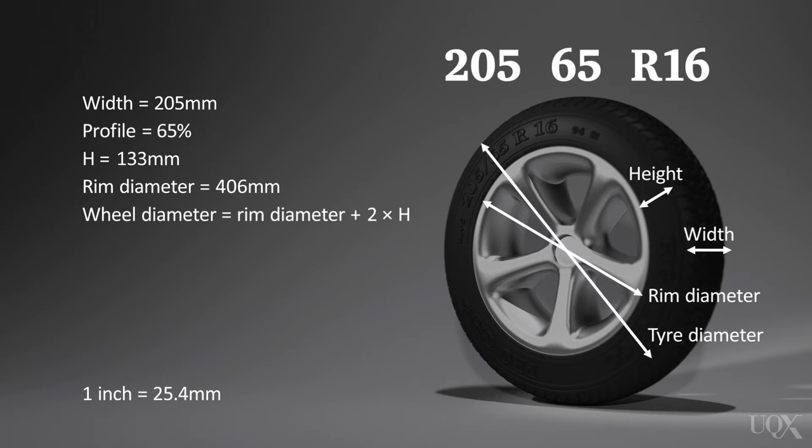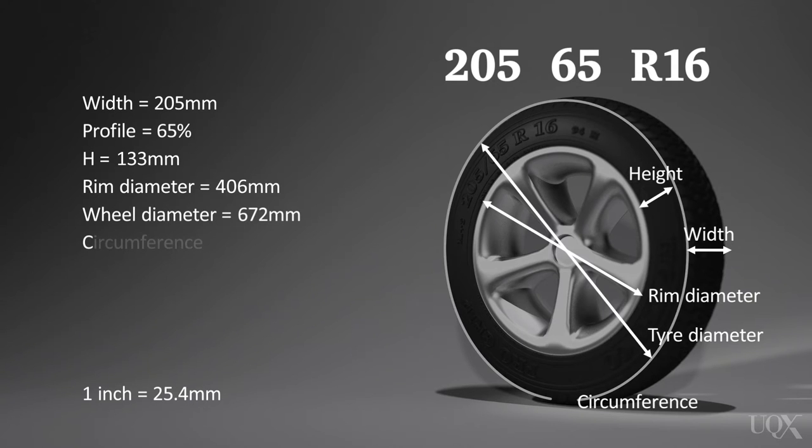The total wheel diameter is the rim diameter plus twice the tyre profile height. In this case, 406 millimetres plus 133 millimetres plus 133 millimetres equals 672 millimetres. Circumference c equals pi times diameter d, which equals 2,112 millimetres.